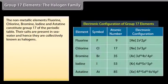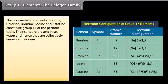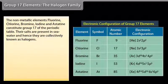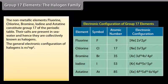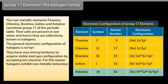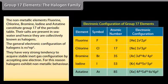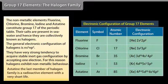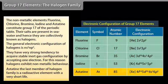Group 17 elements — the halogen family. The non-metallic elements fluorine, chlorine, bromine, iodine and astatine constitute group 17 of the periodic table. Their salts are present in seawater, and hence they are collectively known as halogens. The general electronic configuration of halogens is NS2NP5. They have a very strong tendency to acquire stable inert gas configuration by accepting one electron, and thus exhibit non-metallic behavior. Astatine, the last member, is a radioactive element with a very short life.